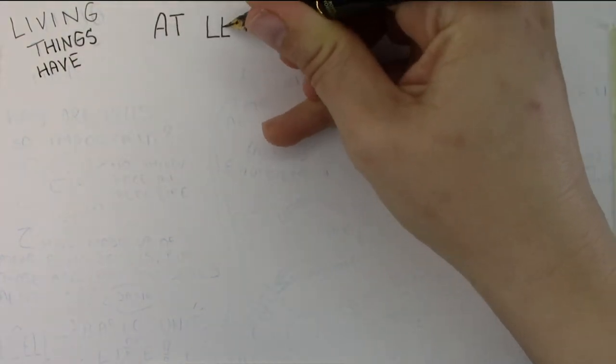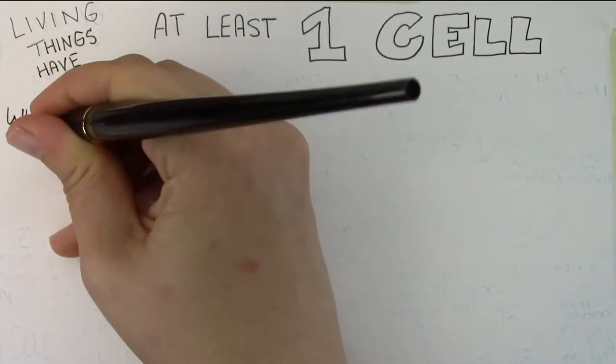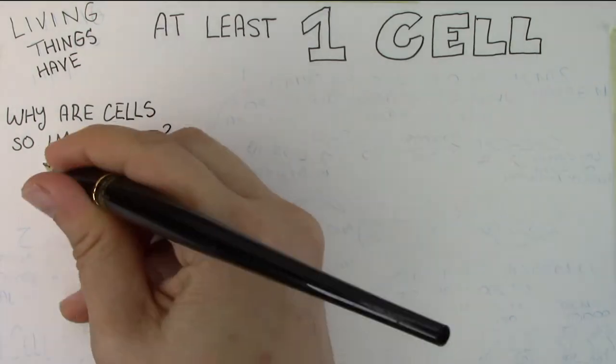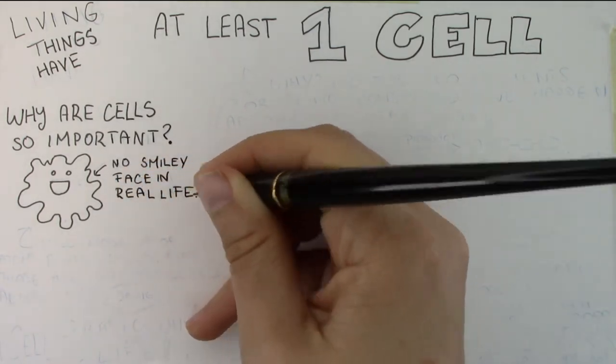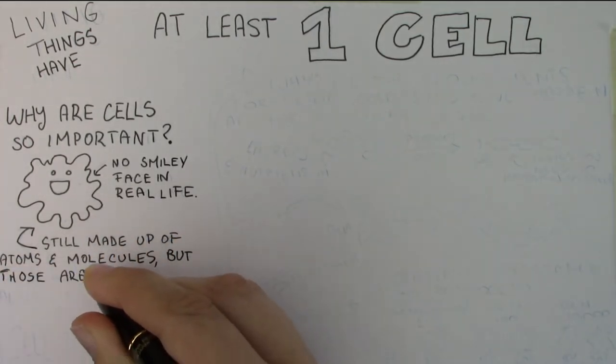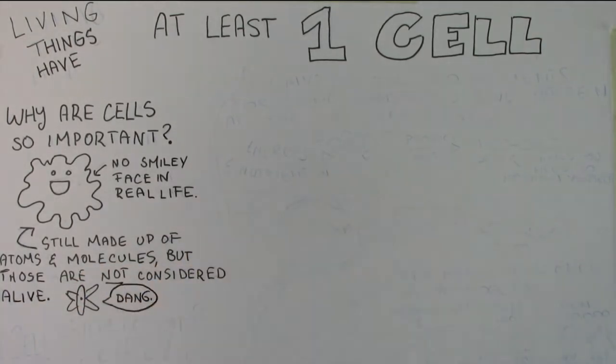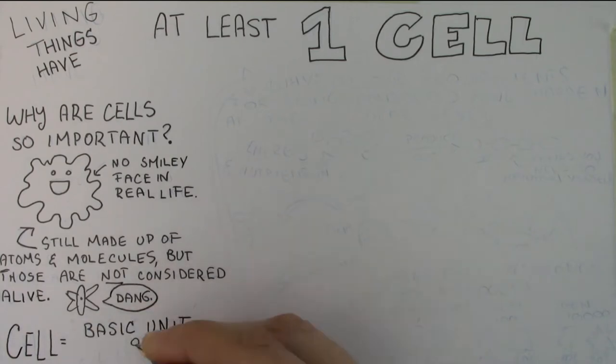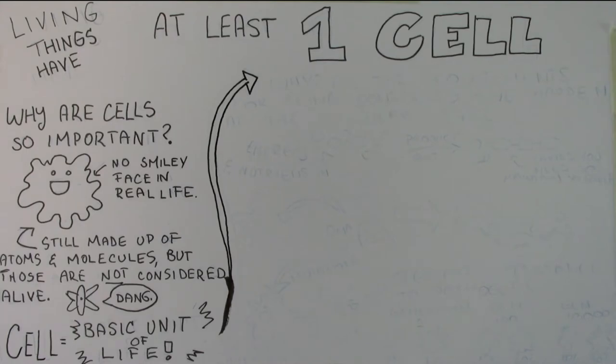I've sort of jumped ahead by mentioning the word cell and referencing that there are organisms that have one cell, which we call single-celled life, and organisms that have hundreds, thousands, millions, or billions of cells. And so this is getting at the first rule that we have. Living things or organisms have at least one cell. So you might be wondering, why is a cell so important? The reason that a cell is so important is that it is the basic unit of life. It is the smallest thing that actually carries out all of the required functions to be considered alive. Now, of course, a cell is made up of atoms and molecules and matter, but those smaller components aren't actually considered alive. The cell is the smallest unit that can be considered alive.